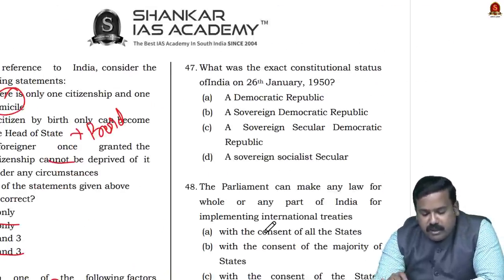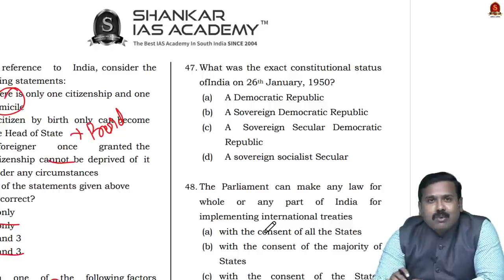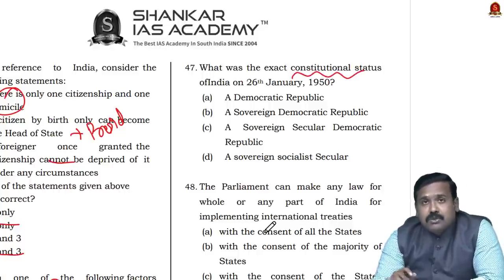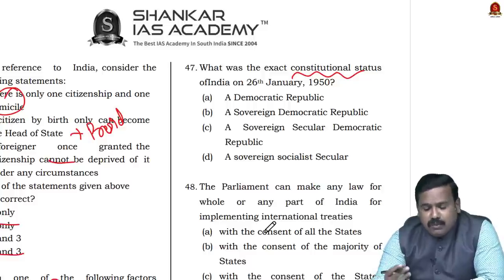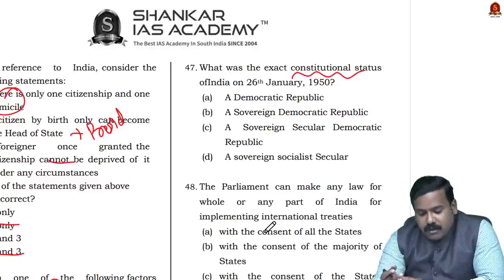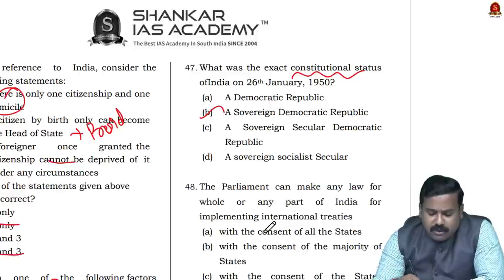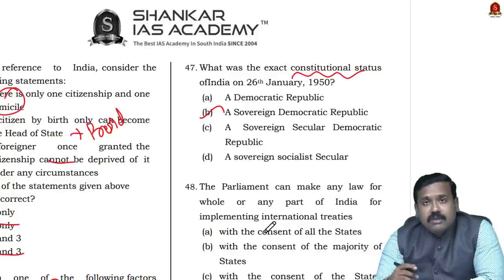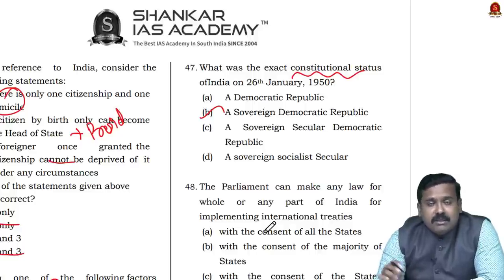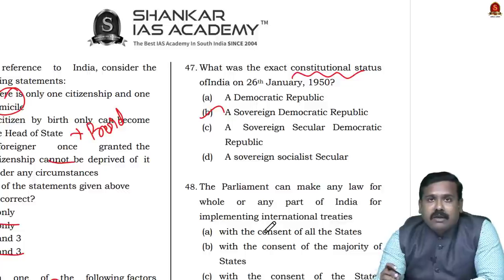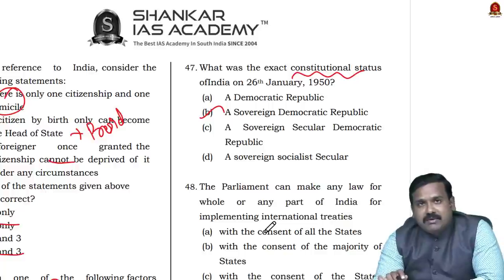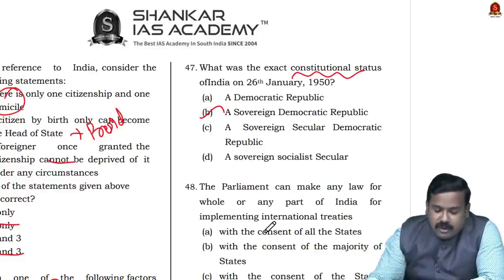Question 44: What was the exact constitutional status of India on 26 January 1950? This is a somewhat controversial question. The words 'socialist' and 'secular' were added to the Preamble only by the 42nd Amendment. Even though some argue India was already secular before that, UPSC went with option B — sovereign democratic republic — as the constitutional status on 26 January 1950.